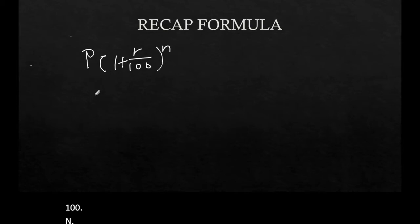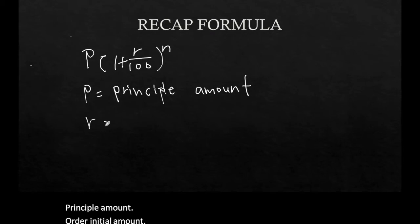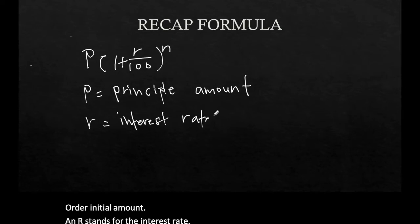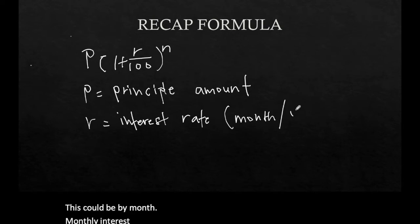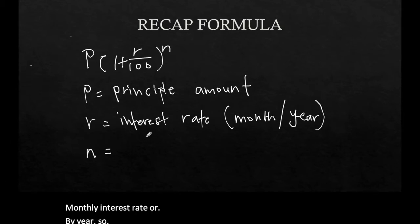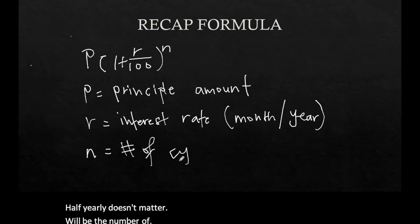P stands for the principal amount, or the initial amount, and r stands for the interest rate. This could be the monthly interest rate or by year — per annum — or quarterly, half-yearly, it doesn't matter. And n will be the number of cycles.